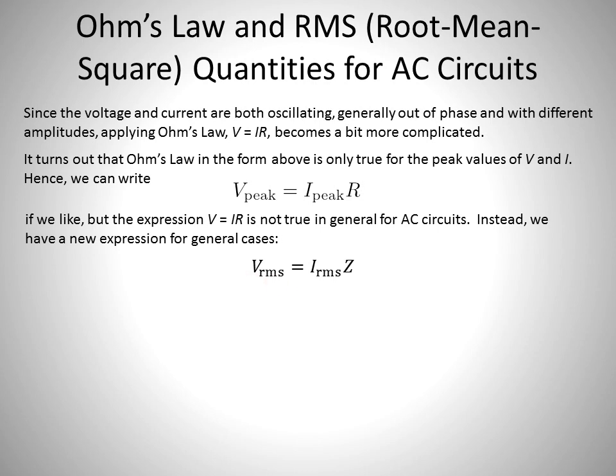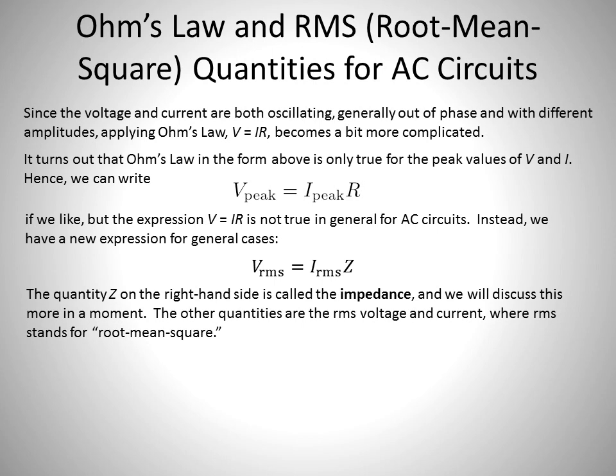It's going to say that V RMS is equal to I RMS. So no longer the peaks, but the RMS is equal, or the voltage is equal to the current times the Z. Z is called impedance. The quantity of impedance is Z. We're going to actually discuss in a later video.